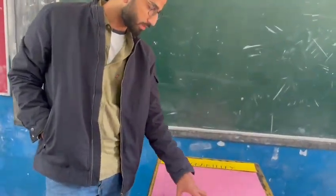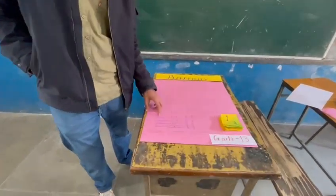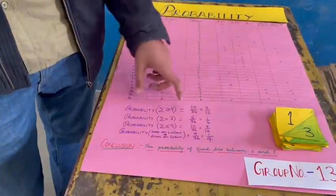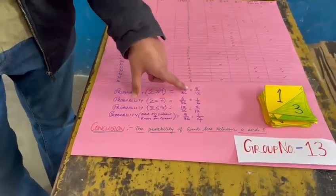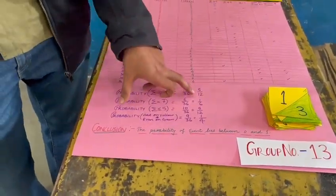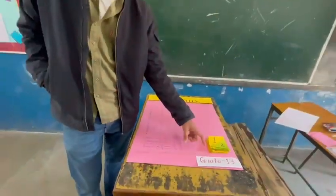And by counting all these favorable outcomes, we will conclude that the probability for sum of both the outcomes greater than or equal to 9 is 5 upon 12, and so on for all these events. And from these we will conclude that probability for any event will always be between 0 and 1.